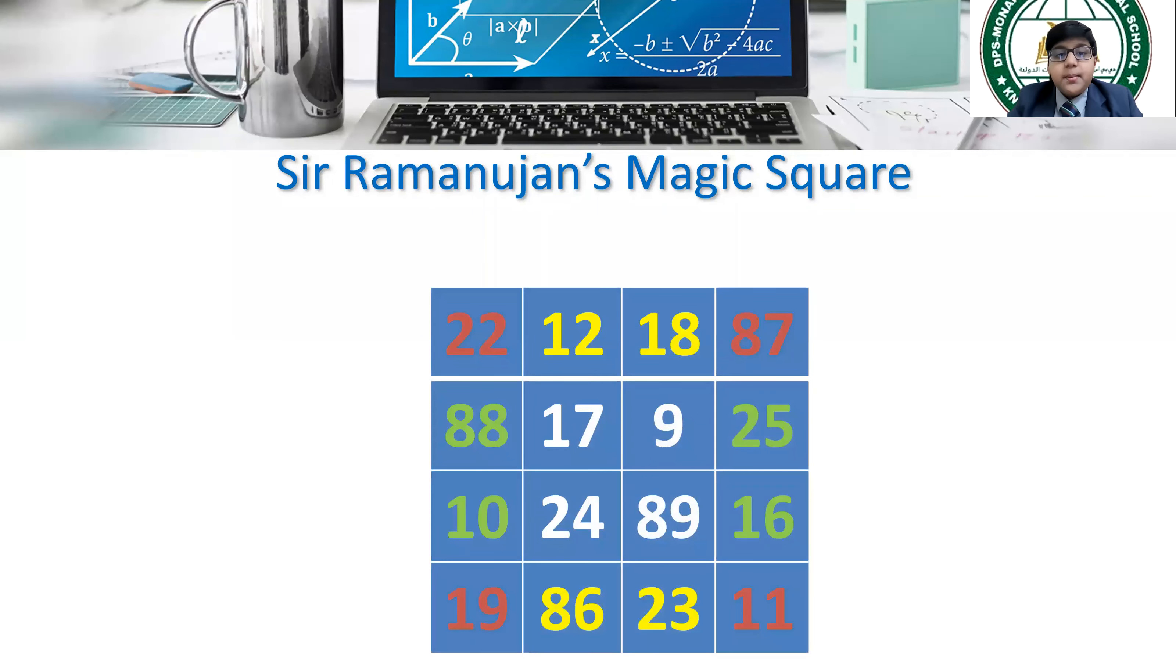What is so special about the square? If you add the numbers in the square row-wise or column-wise, the sum of each row or column will be 139. Also, if you add the numbers diagonally, the answer will be still 139.